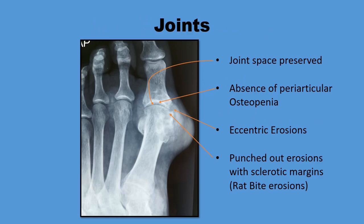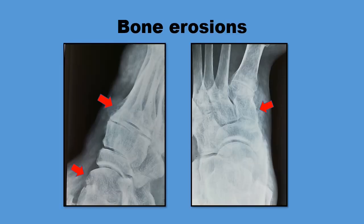In the joints, we see that the joint space is preserved and maintained, and there is absence of periarticular osteopenia. There are erosions that are eccentric and punched out with sclerotic margins and overhanging margins. These erosions are also called rat bite erosions. Bone erosions may also be present, as are visible in these two radiographs.